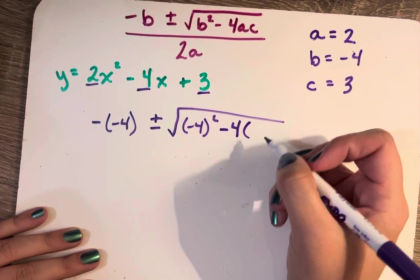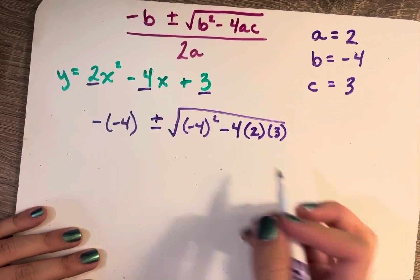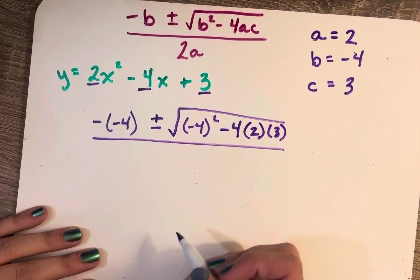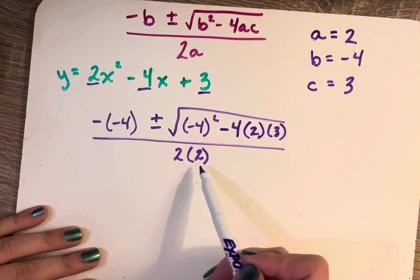Minus 4 times a, which is 2, times c, which is 3, and all of that is going to be divided by 2 times 2, substituting in 2 for a.